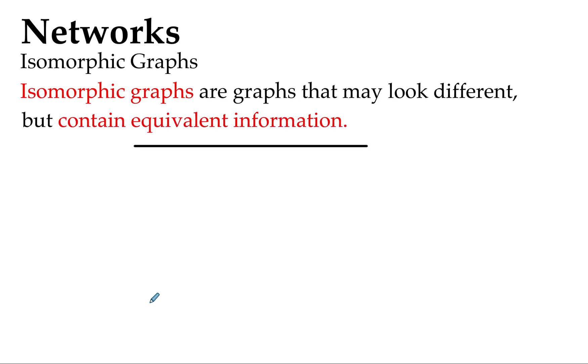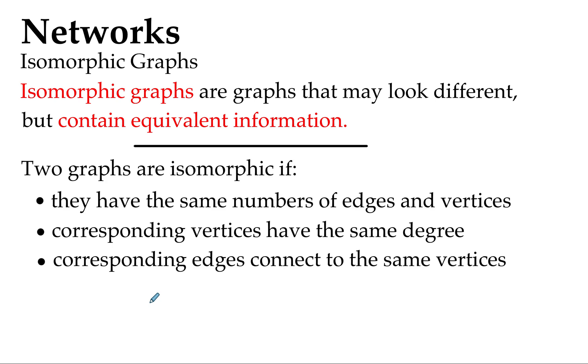So isomorphic graphs are graphs that may look different at first, but actually contain, in the end, when you have a look at it, equivalent information. And we saw the conditions that needed to be satisfied there. Isomorphic graphs, kind of interesting.